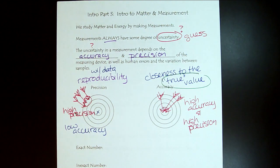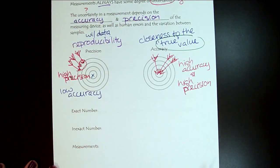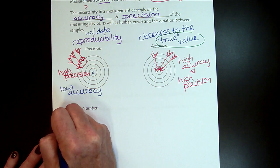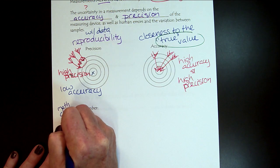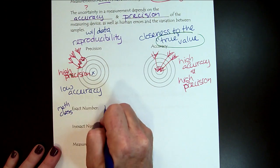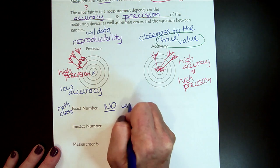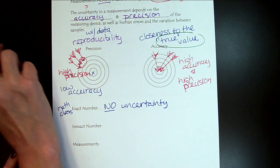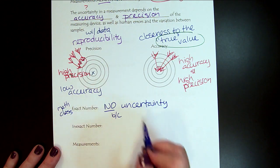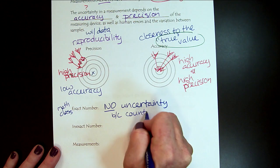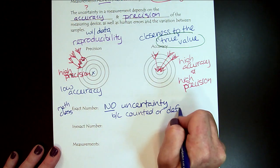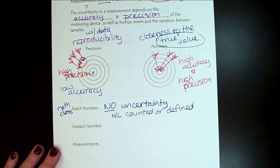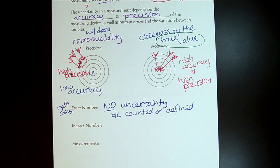Now let's bring in a couple more important concepts and then we'll tie it all together. So exact numbers — these are numbers like what we would see in math class. These are numbers that just come with no uncertainty; there is no question mark in these numbers anywhere. The reason why is because they're either counted or defined.